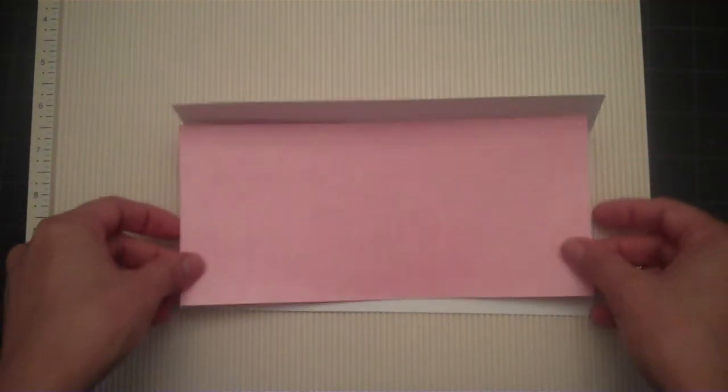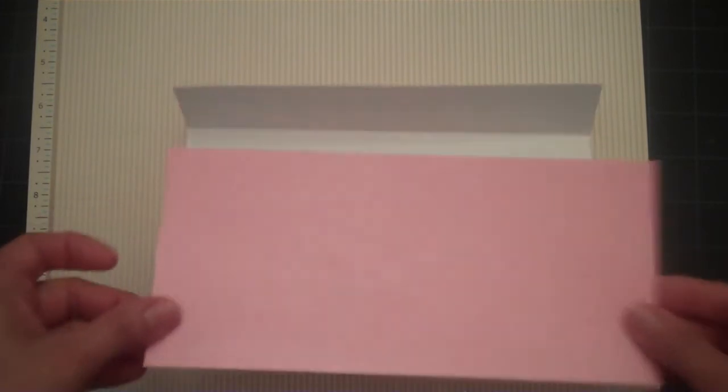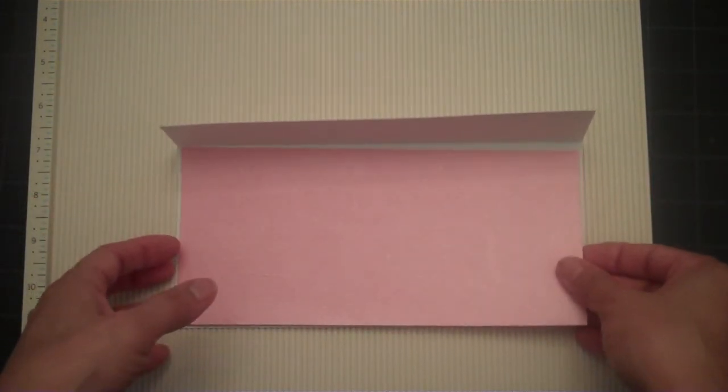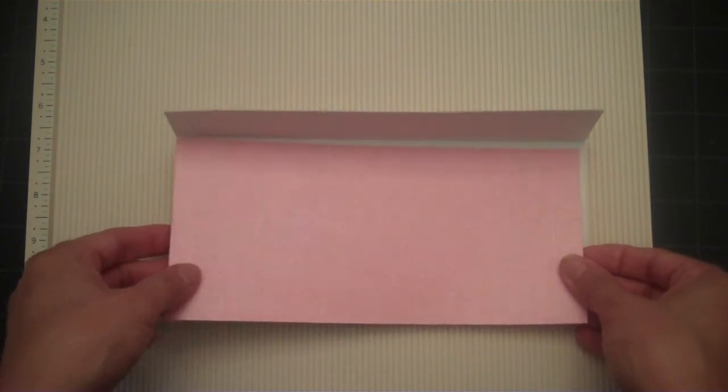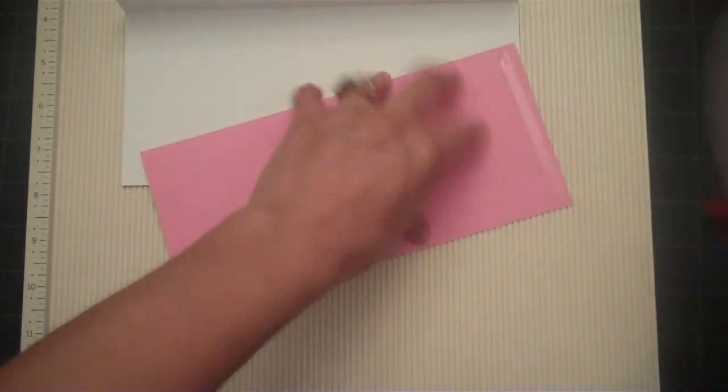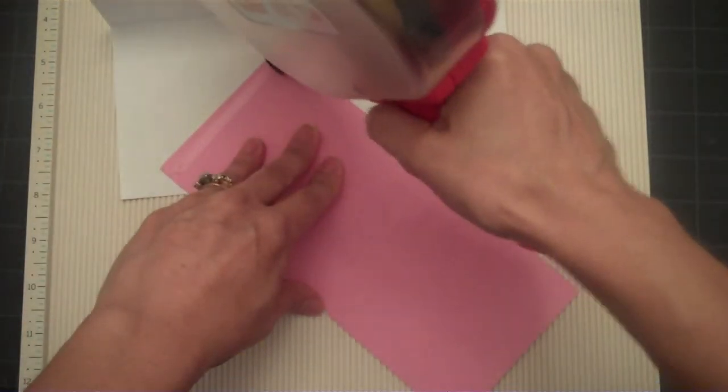And then we'll go ahead and start with the matting of the card. I have a piece of pink cardstock and this is cut at 8 1/4 x 3 3/4. And we'll adhere that to the inside of the card.